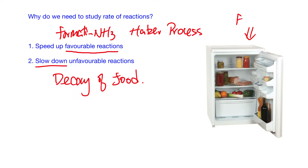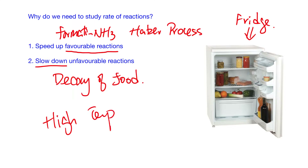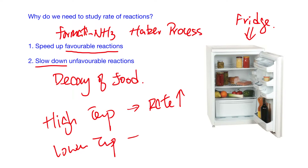That's why we have a fridge — it creates a cold environment. We know that temperature is one of the factors: if we have a high temperature, the reaction rate will normally be faster. So if we lower the temperature, we can reduce the rate and the food will decay more slowly. That is why we have to study rate of reaction.